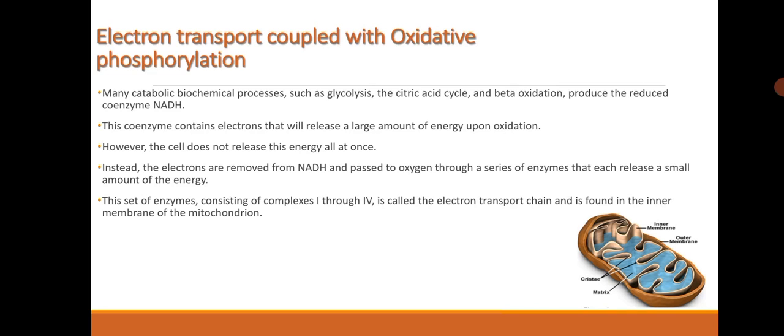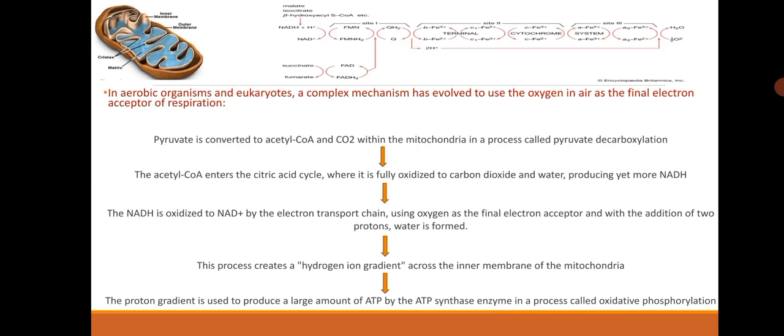Many catabolic biochemical processes such as glycolysis, the citric acid cycle, and beta-oxidation produce the reduced coenzyme NADH. This coenzyme contains electrons that will release a large amount of energy upon oxidation. However, the cell does not release this energy all at once. Instead, the electrons are removed from NADH and passed to oxygen through a series of enzymes that each release a small amount of energy. This set of enzymes, consisting of complexes 1 to 4, is called the electron transport chain and is found in the inner membrane of the mitochondrion.